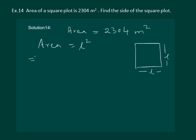So that implies we are given that L square is equal to 2304. So L will be equal to square root of 2304. Let us find the square root.